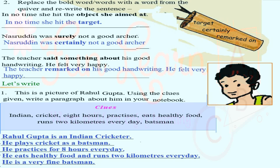This is a picture of Rahul Gupta. Using the clues given — Indian cricket, eight hours, practices, eats healthy food — write sentences: Rahul Gupta is an Indian cricketer. He plays cricket as a batsman. He practices for eight hours every day. He eats healthy food and runs two kilometers every day. He is a very fine batsman. You can make your own sentences using these clues.